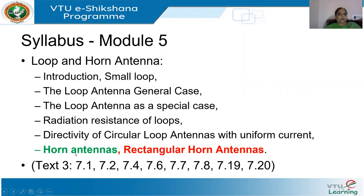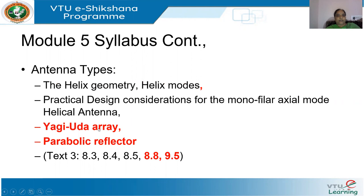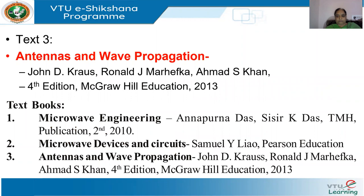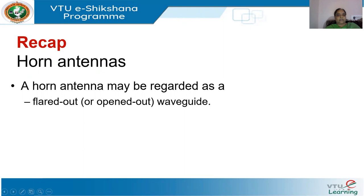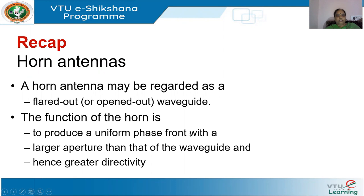We have finished the basics of horn antennas. Today we will be doing rectangular horn antennas, followed by Yagi-Uda array and parabolic reflector. A horn antenna can be regarded as an opened-out or flared-out waveguide, and its job is to produce a uniform wavefront with an aperture that is larger than that of the waveguide, so that we get a greater directivity.